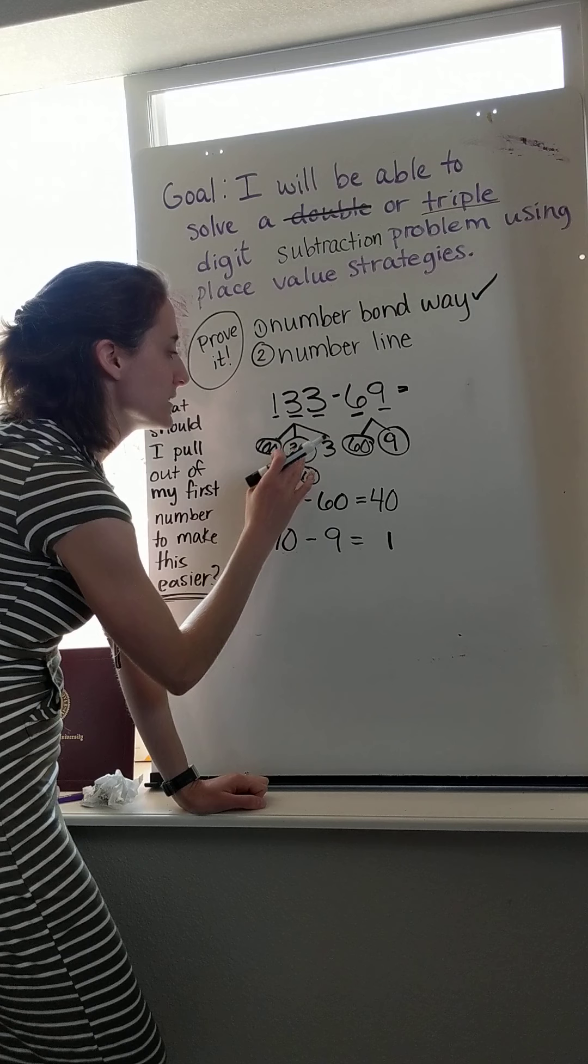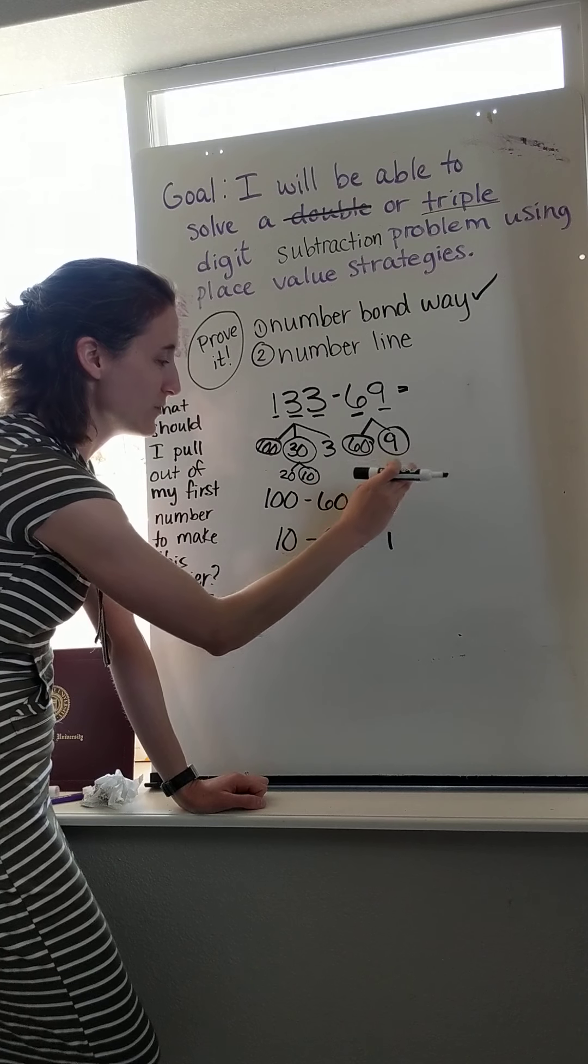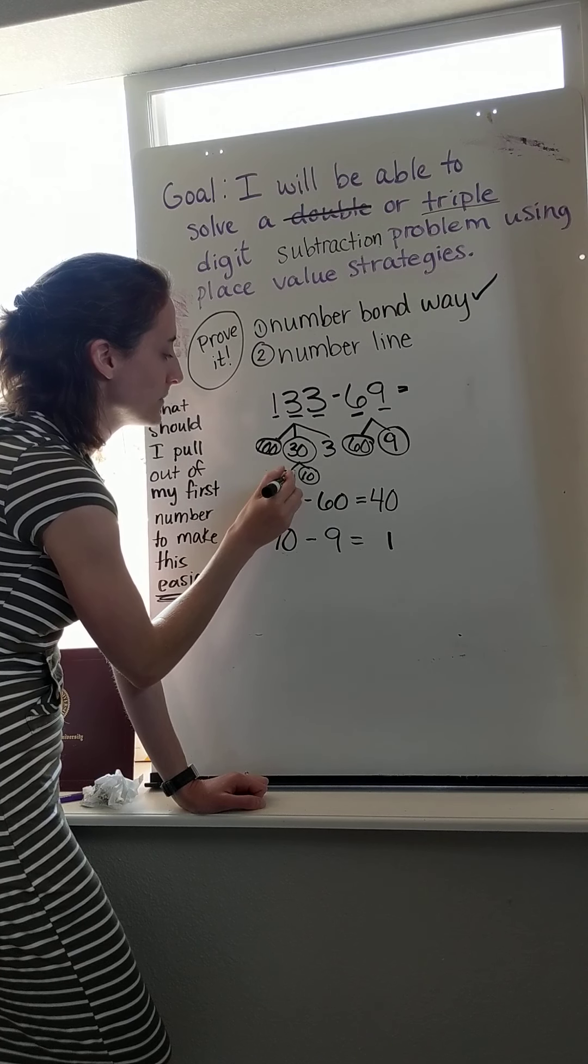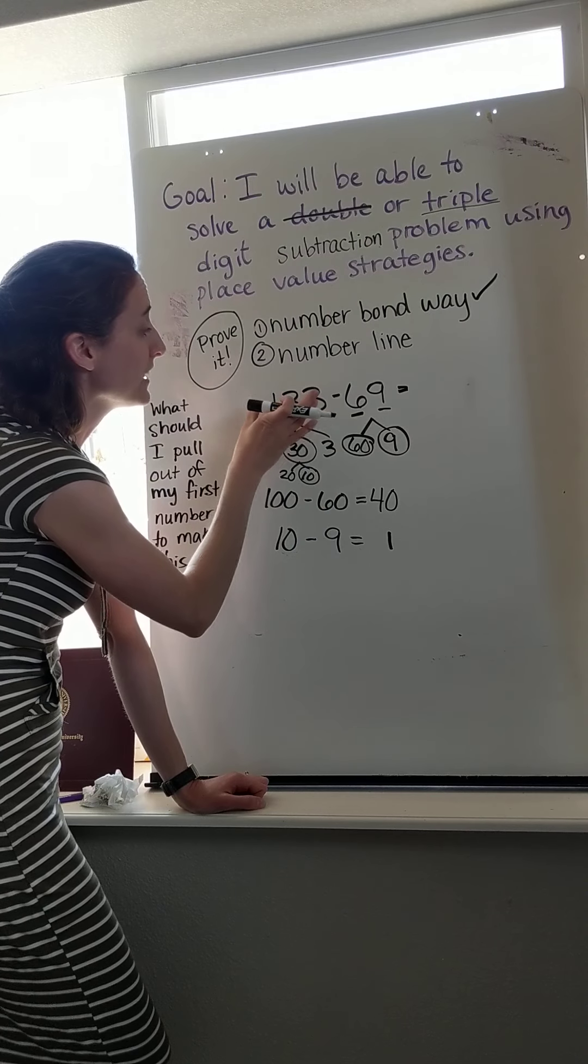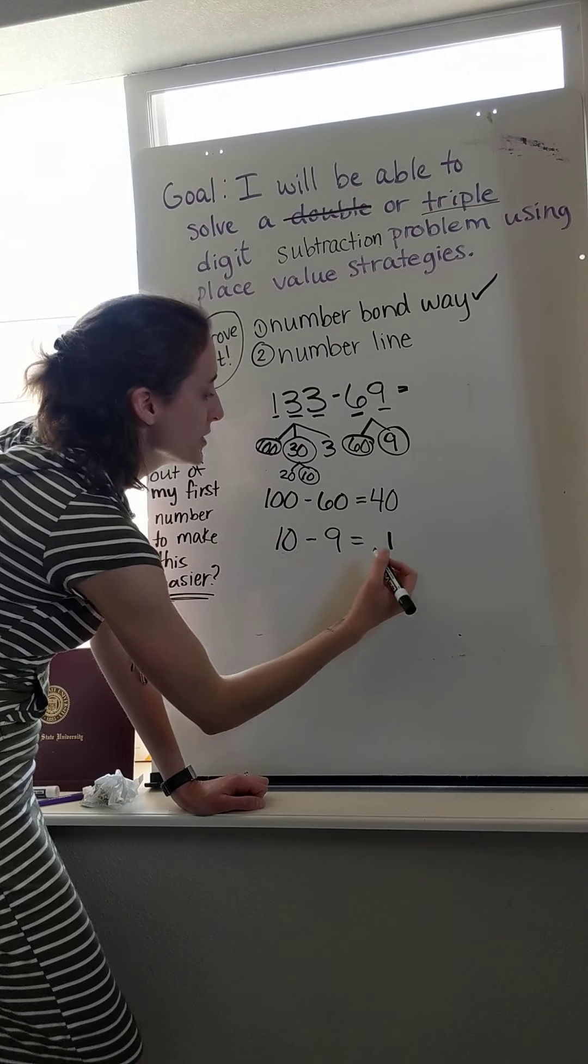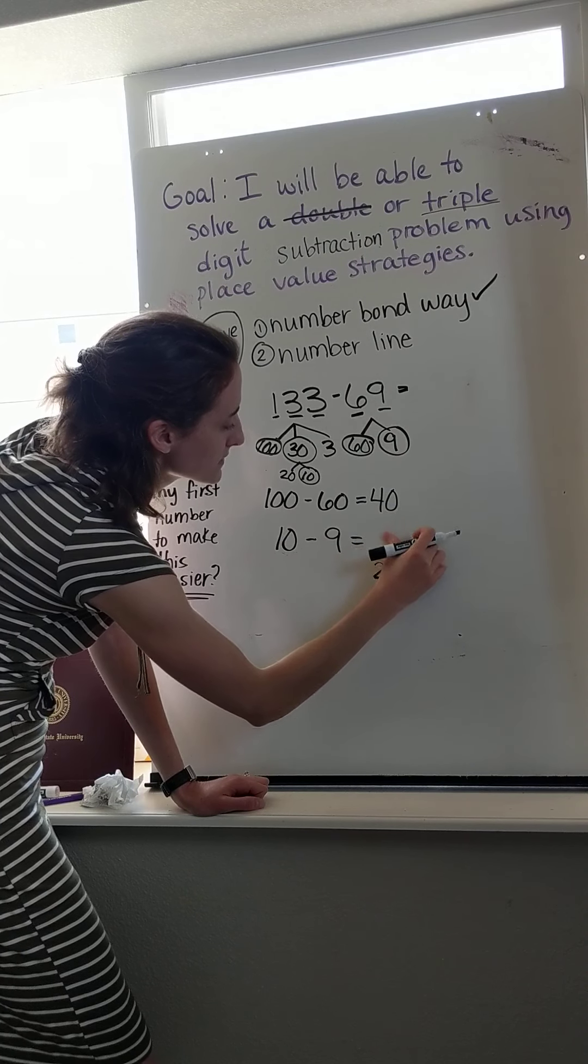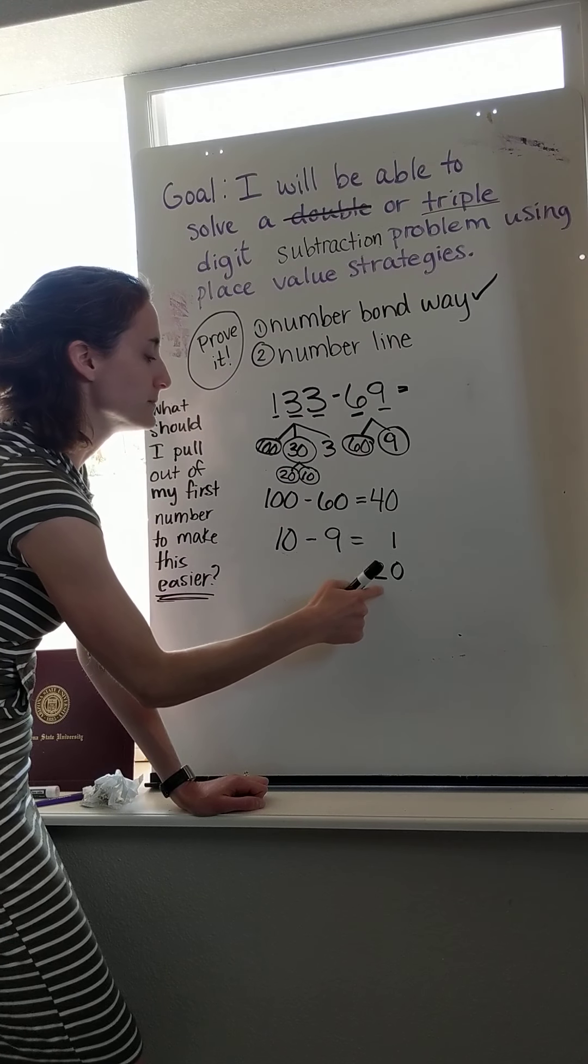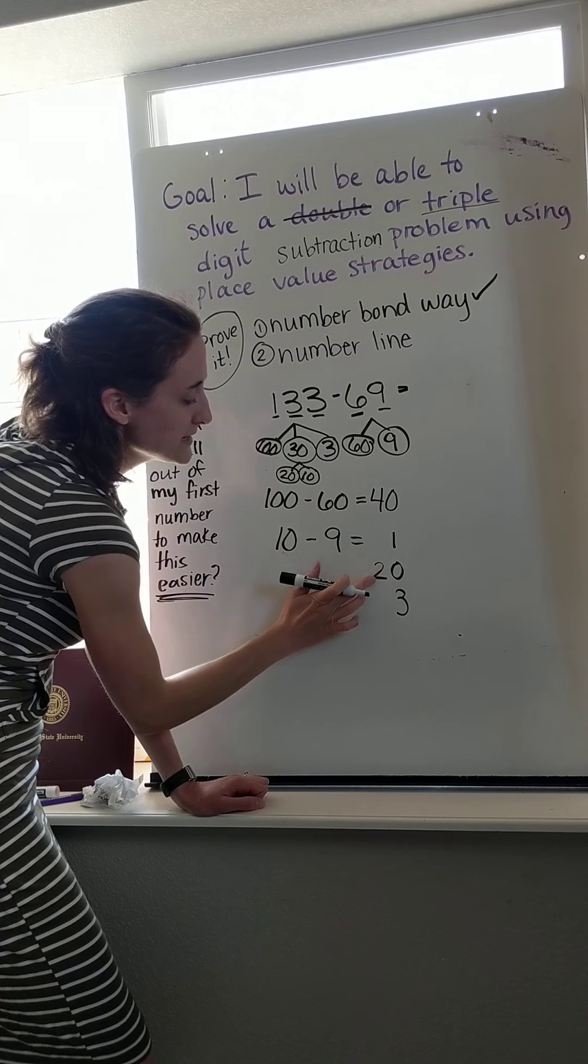But I still have some things to use over here. These two were in my whole, and I don't have anything left to take away. I already subtracted 60. I already subtracted 9. So I have to add back my 20 and my 3. Those are the only two things not circled that I haven't used. And they are in my whole. So I'm not taking them away. So I have to add them back to what I have left. So I'm going to put 20 under here, lining up my ones and my tens. And then I still have 3 to add back as well.